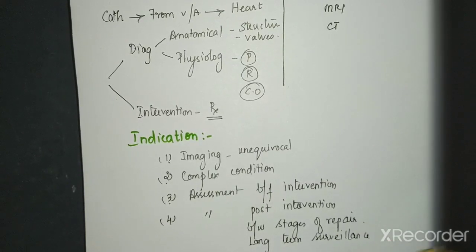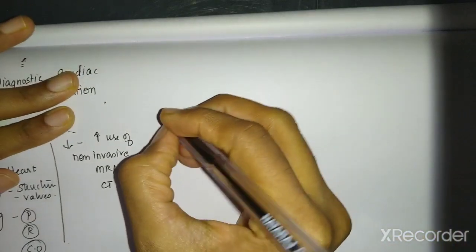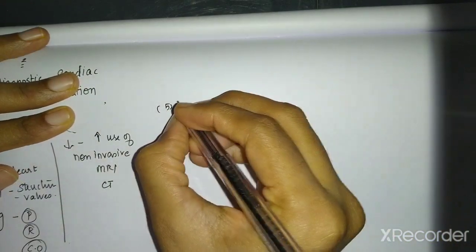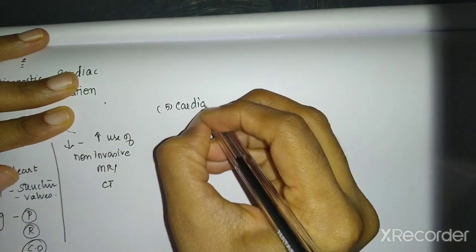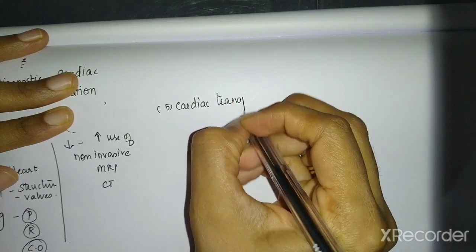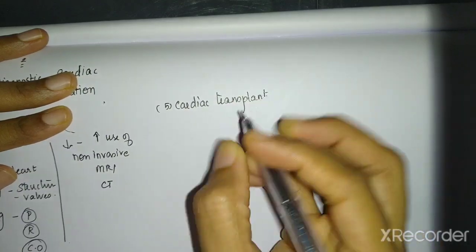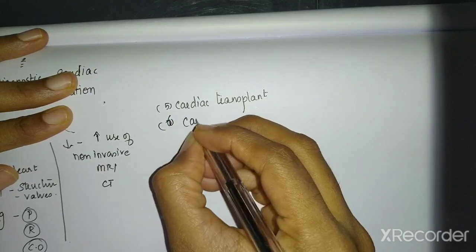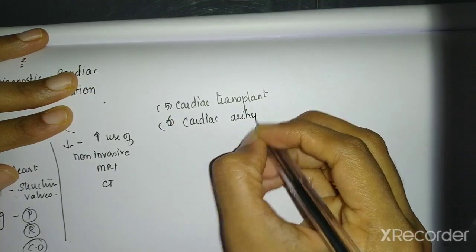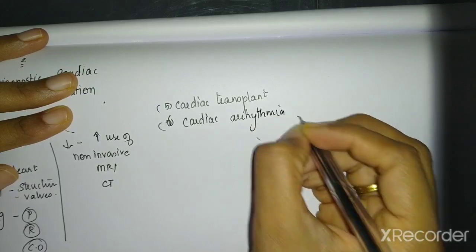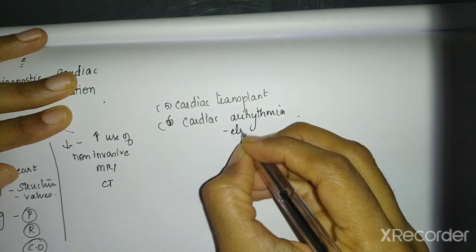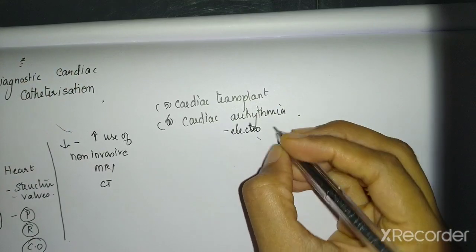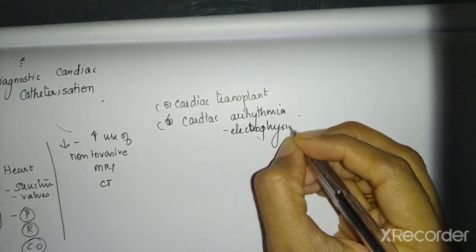Or you want to do an assessment before intervention. Or some intervention has been done like a surgery. Or it can be like a long-term surveillance post-intervention. Suppose this child has undergone cardiac transplant, so you need to monitor for rejection. So for that it can be done. Or in case of cardiac arrhythmias, you need to do electrophysiological studies. Then you will use cardiac catheterization as a diagnostic modality.